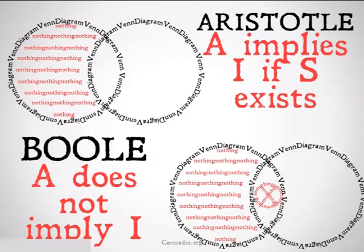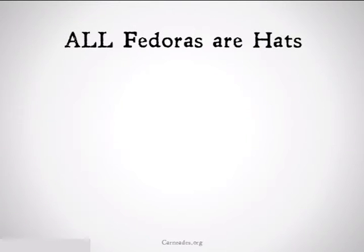What we're going to do is draw our diagram as before, but we're going to put an X in the middle like we would for the I statement, but draw a circle around it because it only applies if the subject actually does exist. Let's take a look at some examples.